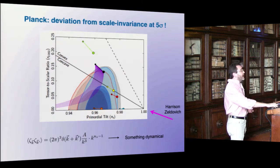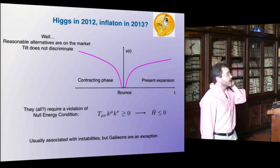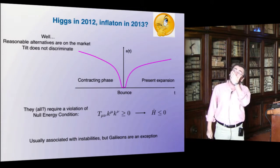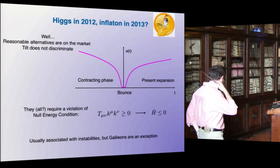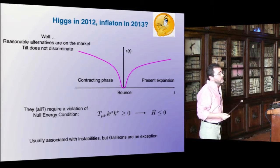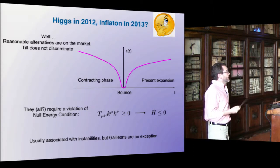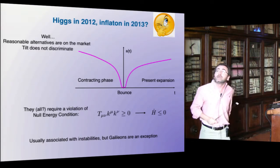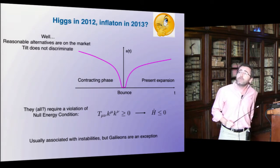Can we say now that inflation is proven? Can we say we discovered the peaks in 2012 and maybe we discovered the inflaton in 2013? I'm not sure. There are still reasonable alternatives in the market, which are not surely as compelling as inflation. On the other hand, compelling is not the end of the story — Technicolor was very compelling, but it's not true. I don't want to describe these scenarios in detail, but I want to mention them.